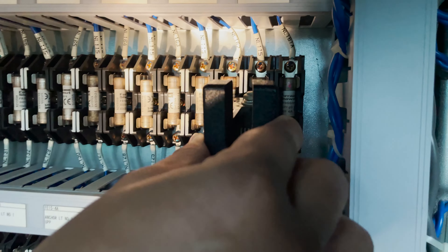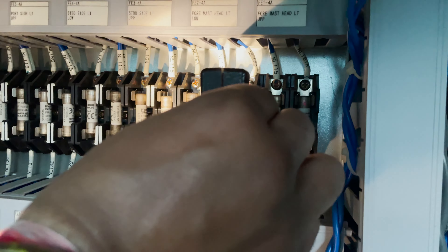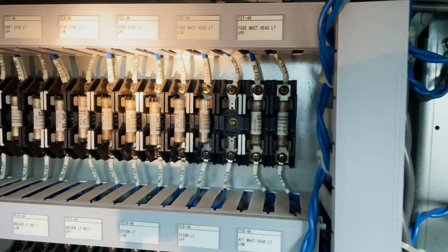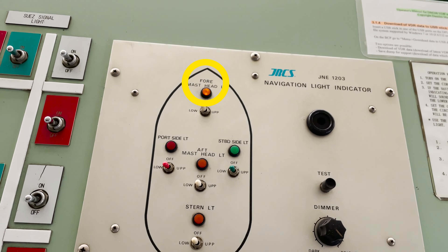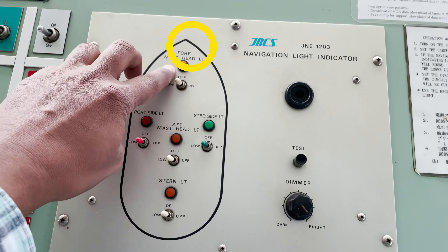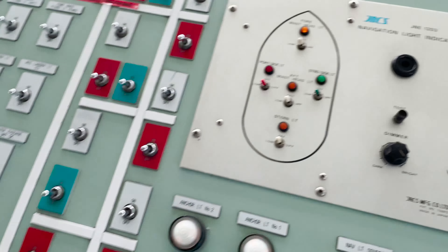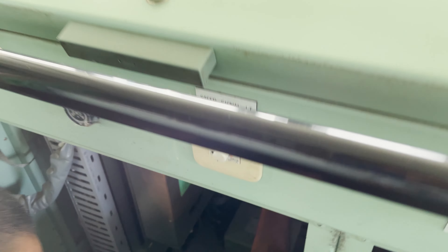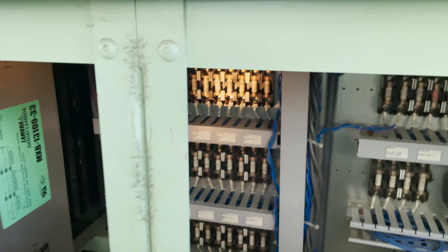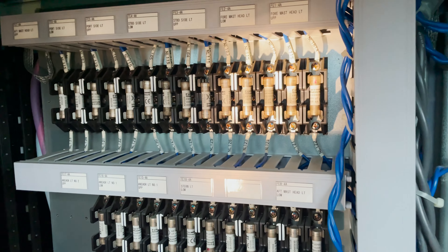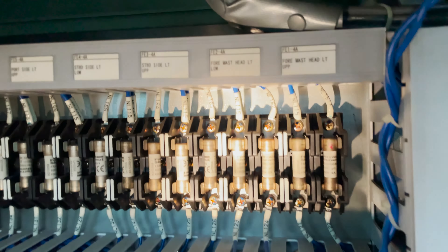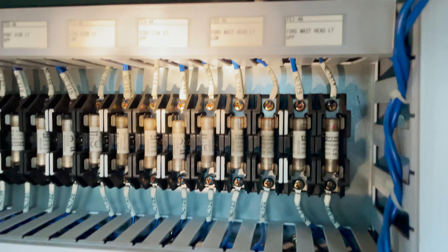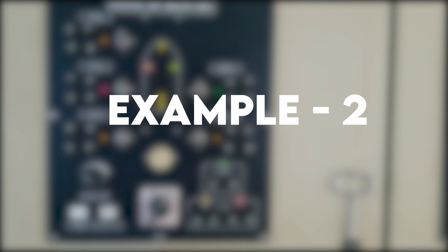For the forward mast lower light there are two fuses, and we can take out either one. Once I have taken out the fuse, you can hear the sound and see the lamp lit up on the forward mast light indicator, giving an indication that the light is fused. Once I put the fuse back, you can hear the sound is gone. That is all our test is about.